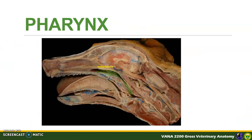As previously discussed under the digestive system, the pharynx is a common passageway for food and air. The nasopharynx is the respiratory part of the pharynx. From the nasal cavity, the air will enter the nasopharynx, then to the laryngopharynx. It will then enter the larynx to the trachea.